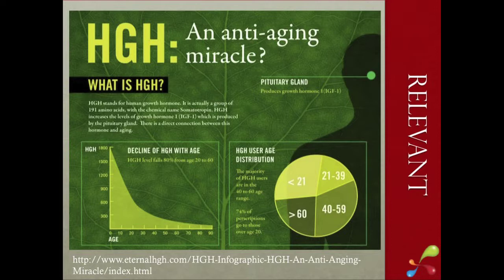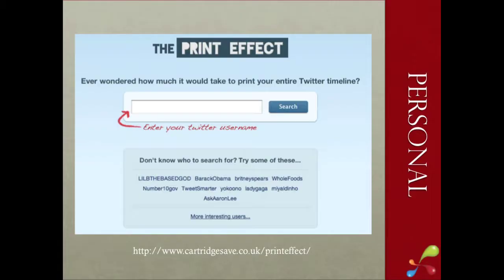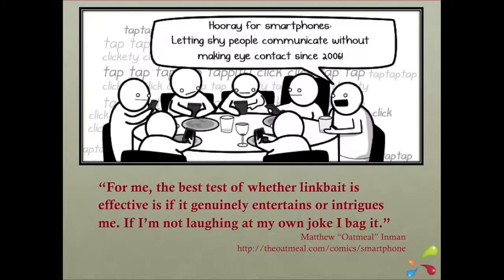Go for the relevant — look at Google Trends, see what people are talking about right now. There's also the personal touch: The Print Effect. You put in your Twitter handle and it tells you how much paper it would take to print out your entire feed — all the people you follow plus every tweet you've ever done. It makes it personal, and people love things to be about them. Matt Inman says: 'For me, the best test of whether link bait is effective is if it genuinely entertains or intrigues me. If I'm not laughing at my own joke, I bag it.' Throughout this entire process, think back to your goals, think back to your person, and ultimately — would you share it? If not, bag it.